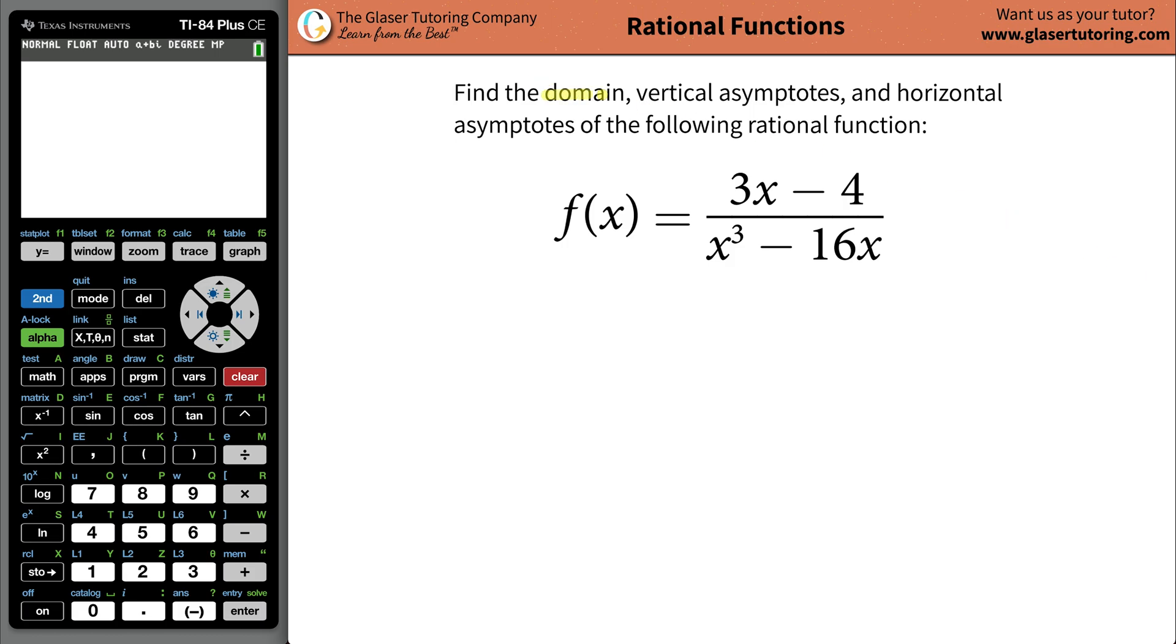Andrew here. Today I would like to teach you how to find the domain, vertical asymptotes, and horizontal asymptotes of this rational function of 3x minus 4 divided by x cubed minus 16x. So what we need to do first is we need to find the domain.